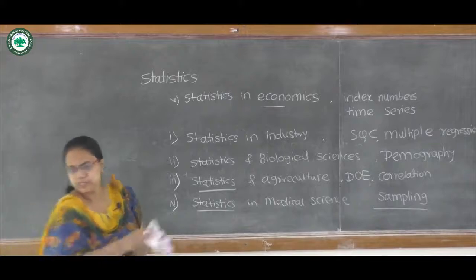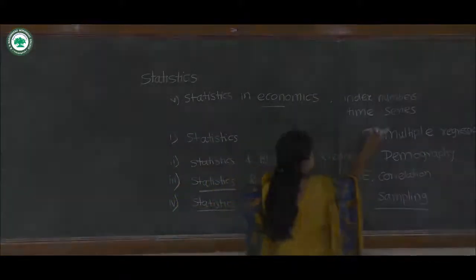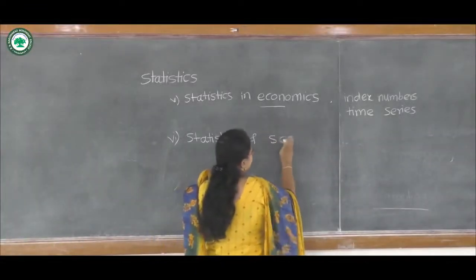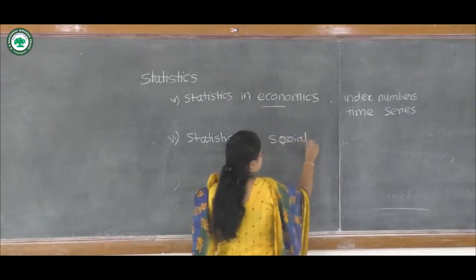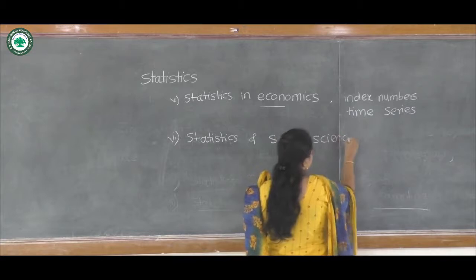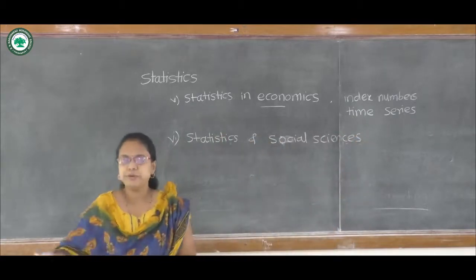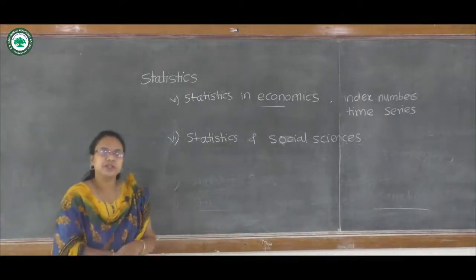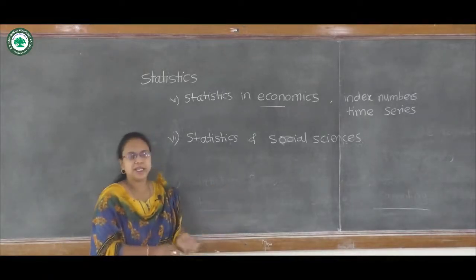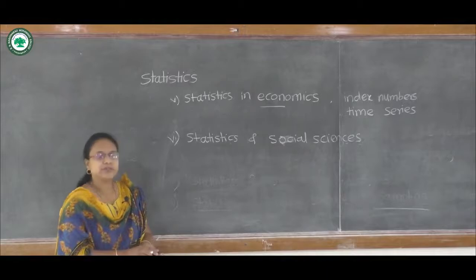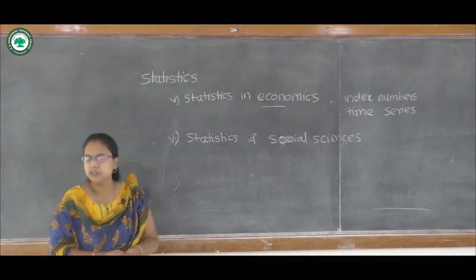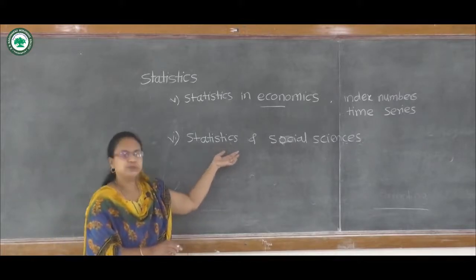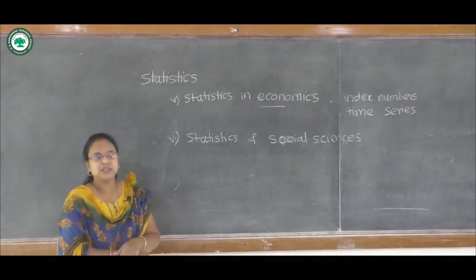The next point is statistics and social sciences. In social sciences, we may be interested in finding relations such as education and gender ratio, or education and marriage adjustment score. These types of results may be compared using various statistical tools. There are many tests such as the chi-square test, which can be used to compare various factors in social sciences.